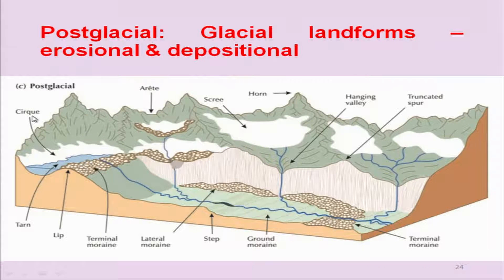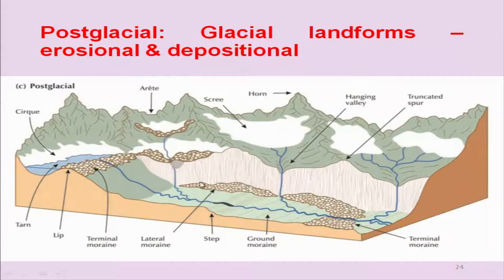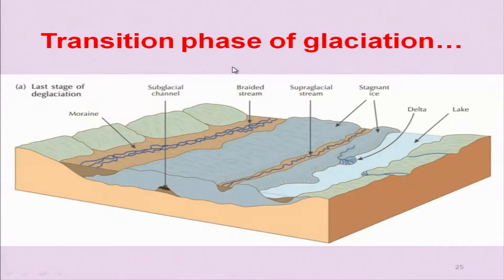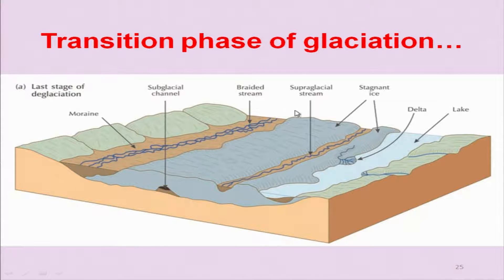Then you have arêtes, cirques, horns, and hanging valleys, because the glacial mass which covered this area has eroded and resulted in the formation of sharp cliffs, truncated spurs, and all that. Post-glacial, you will find both erosional and depositional landforms. In the transition phase of the glacier, you will again have the formation of drainages where braided streams will come into existence, and also fluvial activities will be seen in the region.